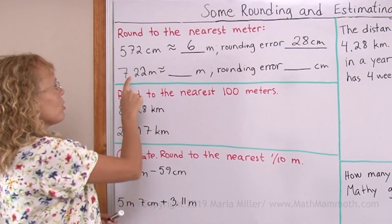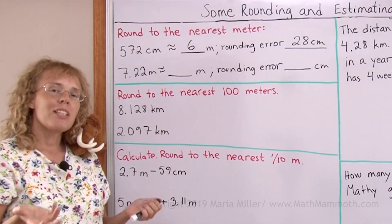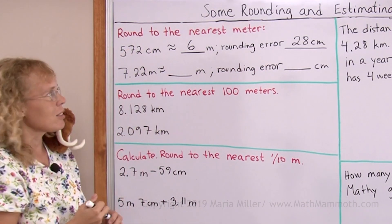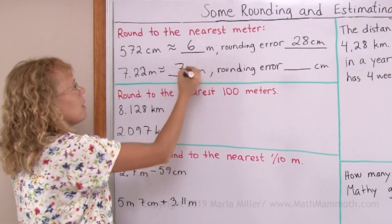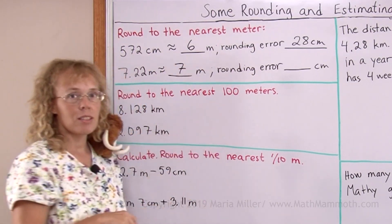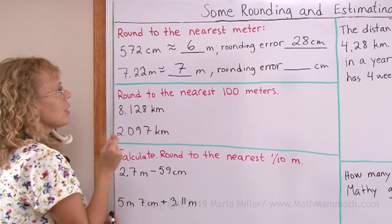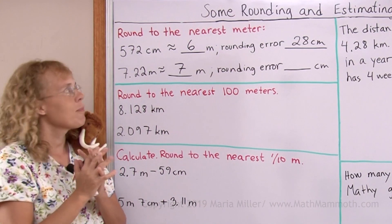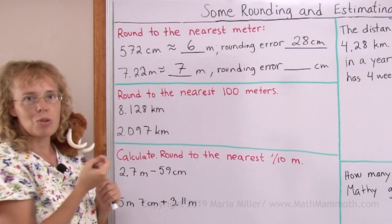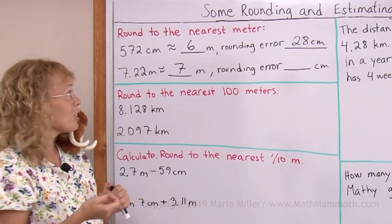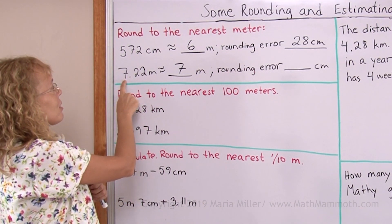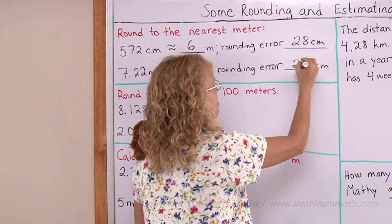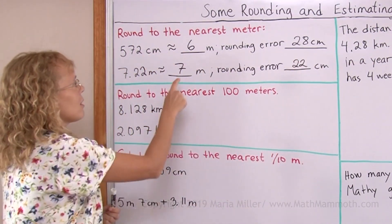Another. 7.22 meters, round it to the nearest meter. Well, this is easy because it is already given in meters, we round to exactly 7 meters. Now, rounding error in centimeters. Centimeters are the centi meaning hundredth part. This one is actually exactly 22 hundredths. So it is 22 centimeters here. This is the same as 7 meters, 22 centimeters. So our rounding error is 22 centimeters.